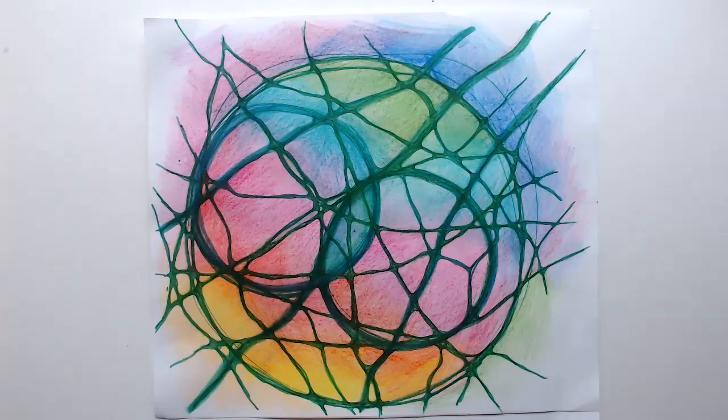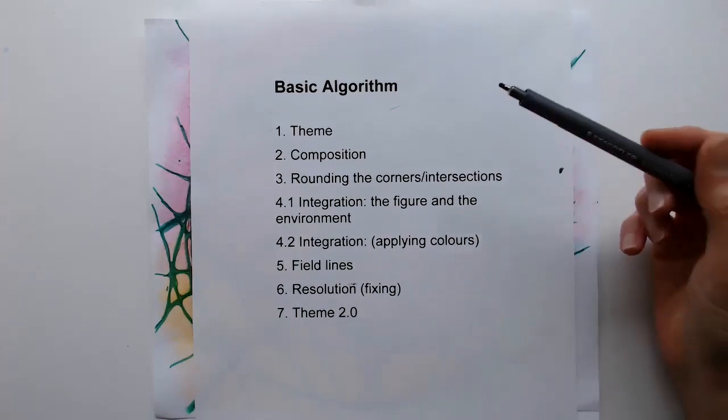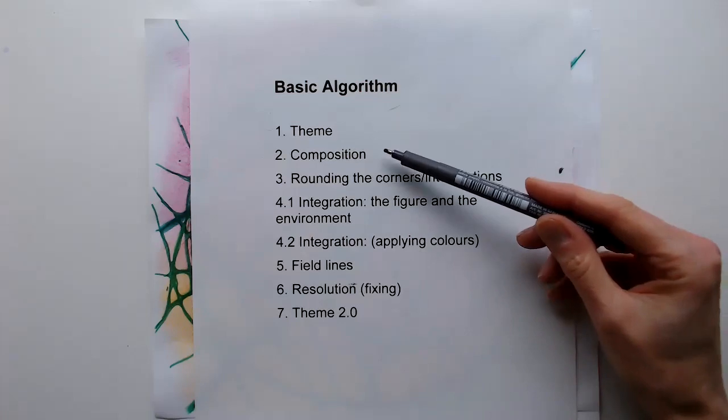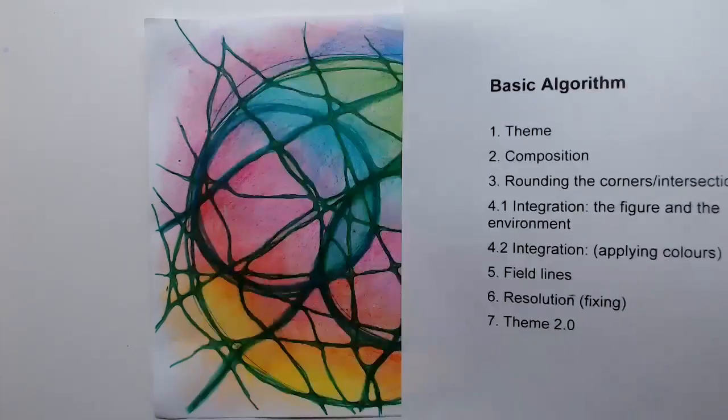So this drawing, as in my class, is done using just a seven-step formula that I mentioned before. It includes a theme, the topic that we're drawing, composition, how it was drawn, rounding the corners. It's probably, you see those green roundings.